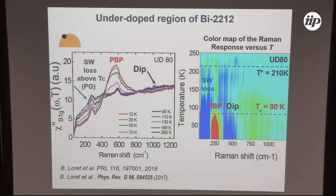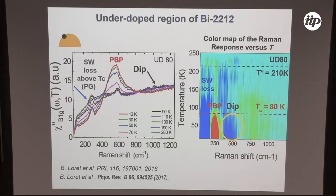Making a color map of the antinodal spectra is much more complicated than before. There is a blue zone — a depletion of the electronic background — which is the signature of the pseudogap in the normal state, enhanced in the superconducting state with the pair-breaking peak. On the right-hand side of the pair-breaking peak, there is a dip, which is the signature of the pseudogap inside the superconducting state. The origin of the dip is still under debate: it could be a collective mode related to the pseudogap, or it could be due to the pseudogap being particle-hole asymmetric with respect to the superconducting gap.